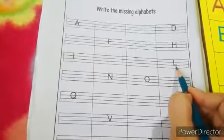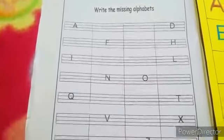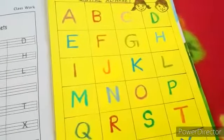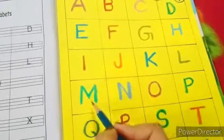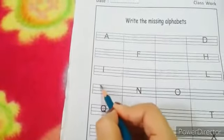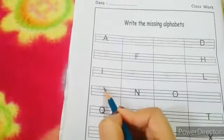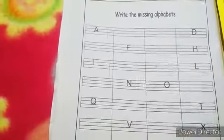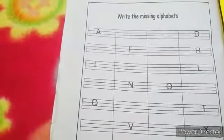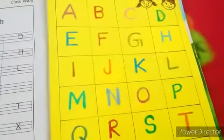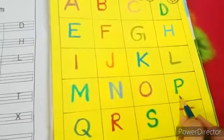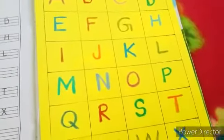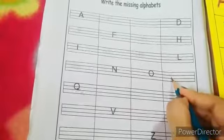L is already written. Now tell me which letter comes after L? Yes, the missing letter is M. M. N and O are already given. Let's see the chart and find out what is the missing letter after O. N, O, P. So the missing letter is P. P.